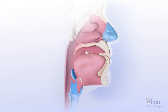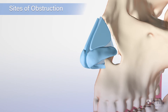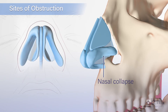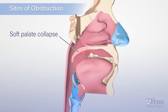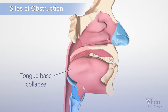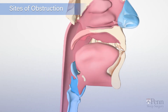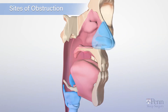Different parts of this anatomy can get in the way of airflow and obstruct your breathing. This is called a collapse. A collapse can occur in the nasal region, the soft palate, the base of the tongue, the epiglottis, or the sidewalls of the throat.